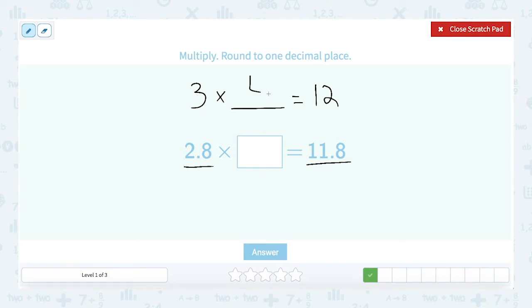Well 3 times 4 is 12. What we actually did there was we took the product of 12 and we divided it by the factor we know which is 3 to get the factor that we didn't know which is 4. So that's the same thing that we're going to do here. We're going to take the product 11.8 and we're going to divide it by the factor we know 2.8 to get the factor we don't know. So 11.8 divided by 2.8.